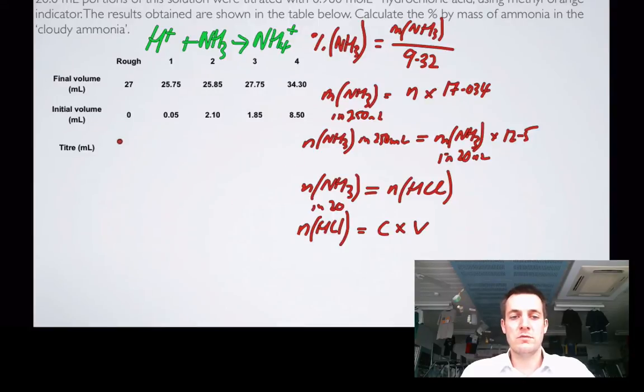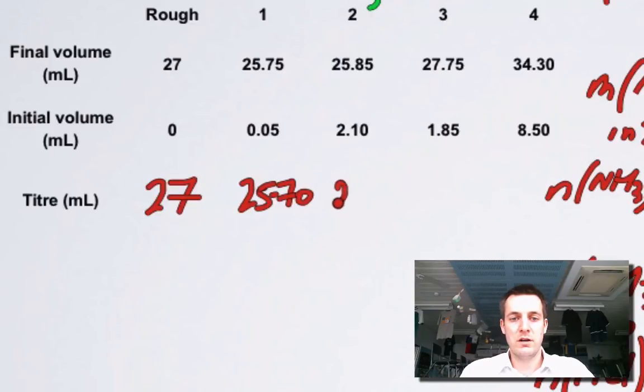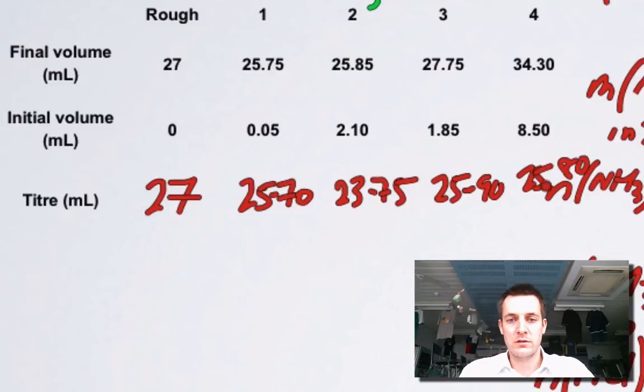So let's have a look at the titer volumes. This one's 27. This one's 25.70. This one is 23.75. This one is going to be 25.90, and this one's 25.80. So there's our titer volumes.